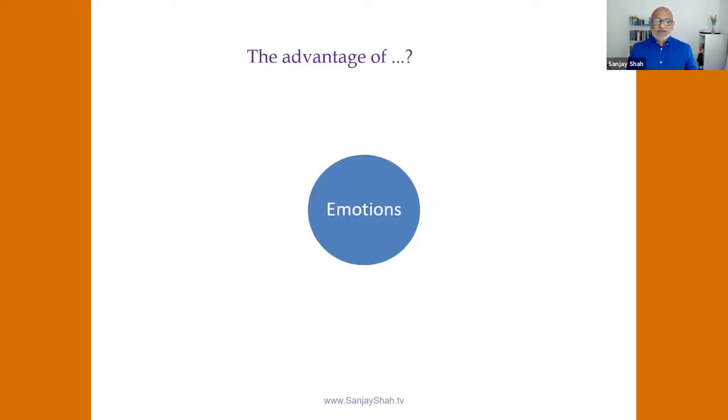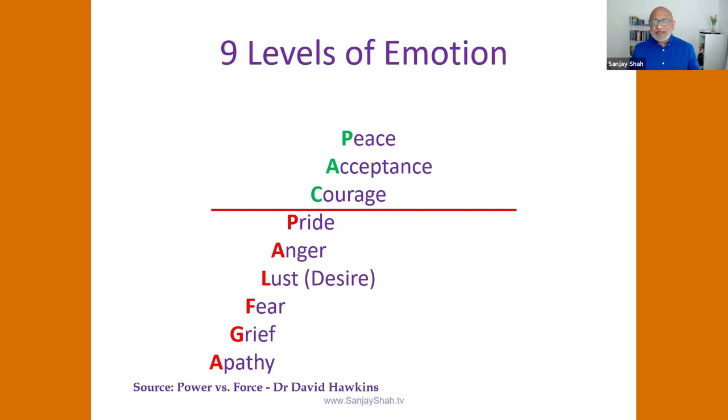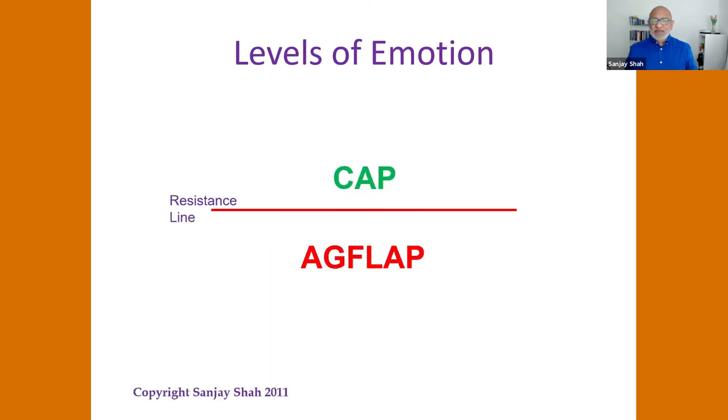So what's the advantage of emotions? The advantage of emotions is basically there are nine levels. All those thousands of thoughts come down to about nine levels of emotion, and I don't want you to even remember this because when I first came across this I couldn't remember all the names.